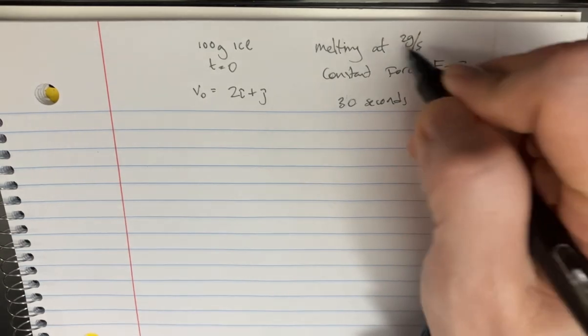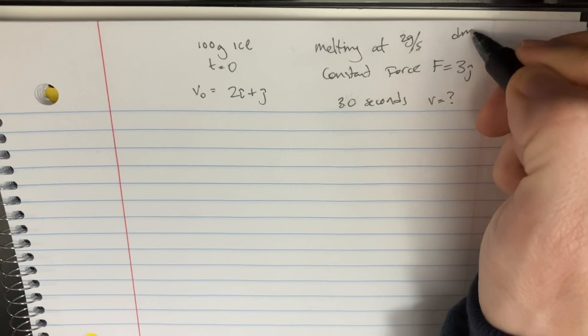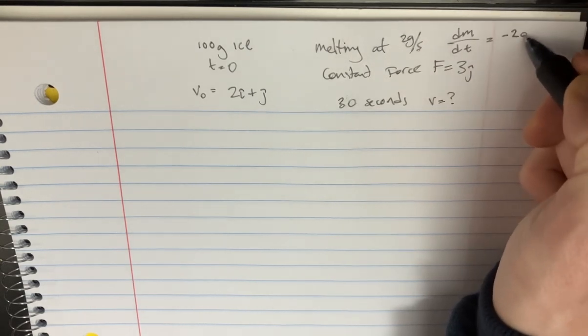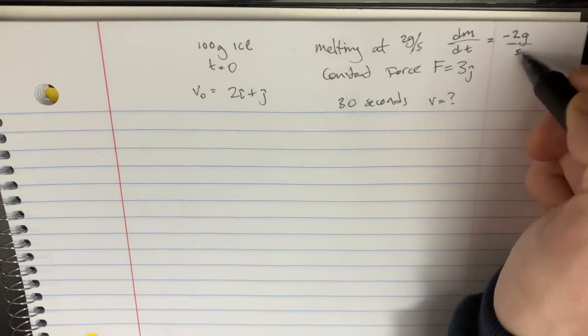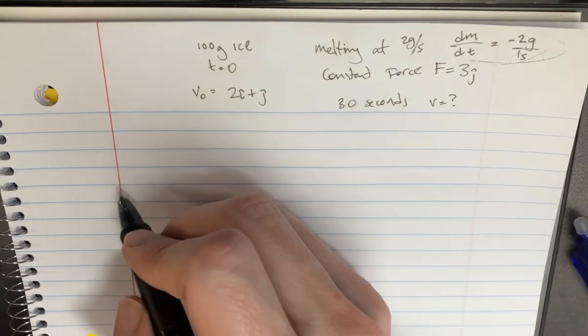Now the first thing we want to try to do is figure out what the melting at 2 grams per second means. So that means that the change of mass over the change of time is equal to negative 2g over s. Okay, so that's something that we can use later in our equations.